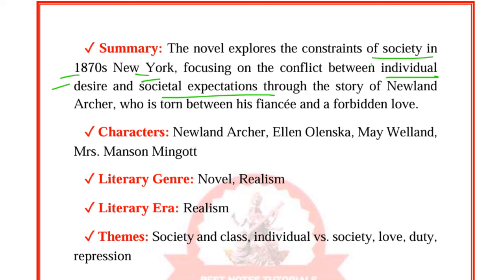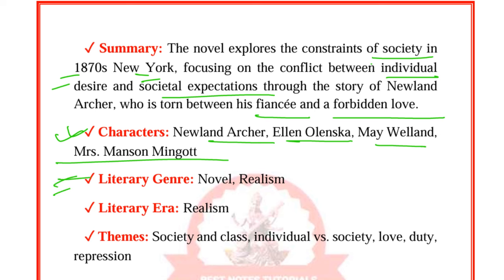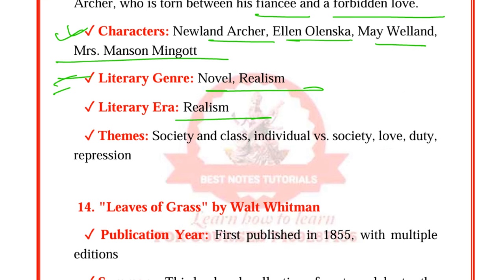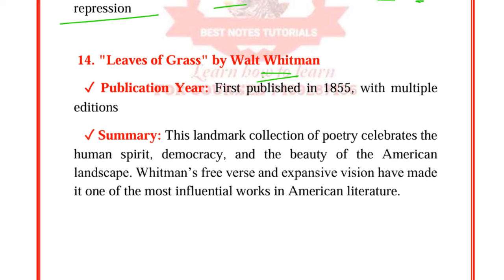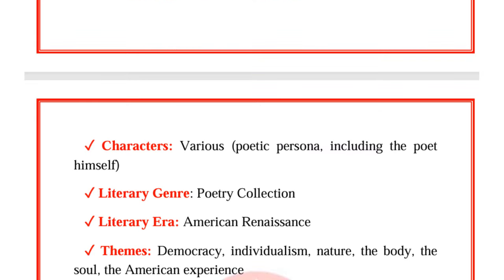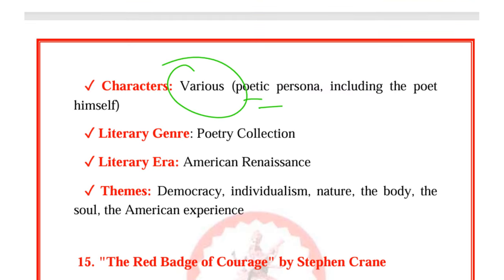The Age of Innocence by Edith Wharton was published in 1920. The novel explores constraints in society in 1870s New York, focusing on the conflict between individual desire and societal expectations through the story of Newland Archer, who is torn between his fiancée and a forbidden love. Characters include Newland Archer, Ellen Olenska, May Welland, and Mrs. Manson Mingott. It is a realist novel. Themes are society and class, individual versus society, love, duty, and repression.